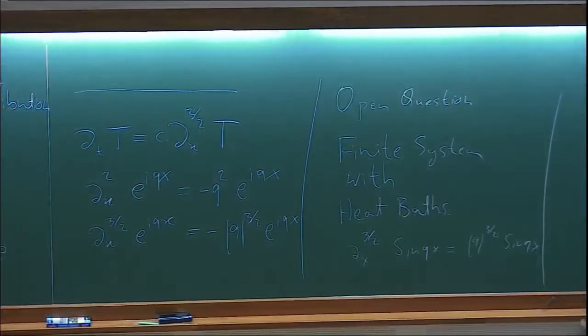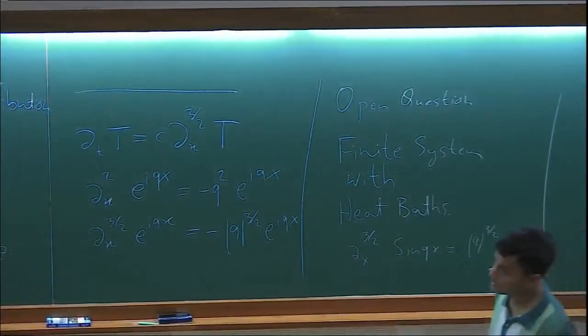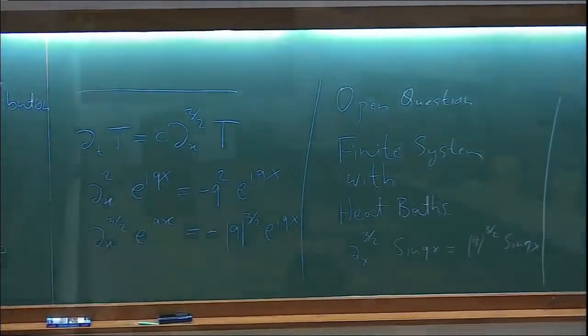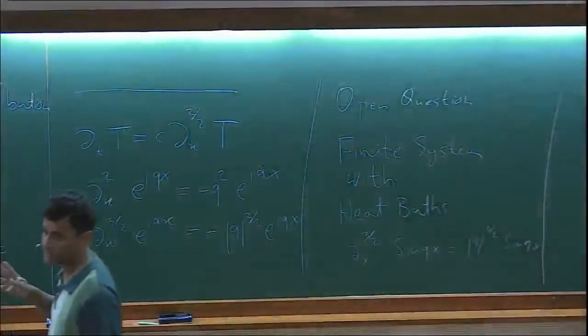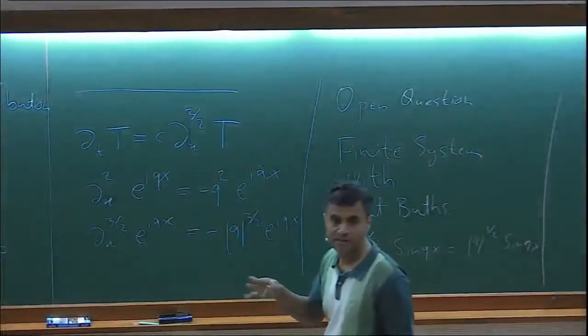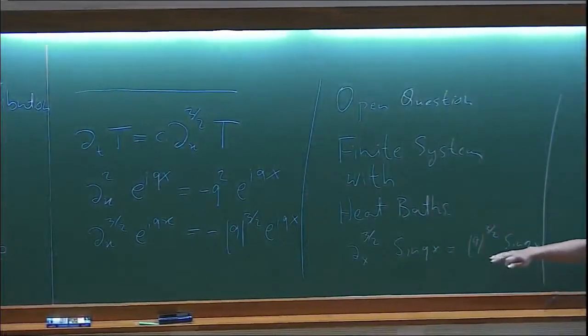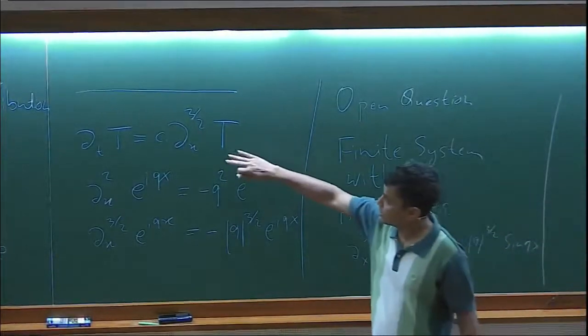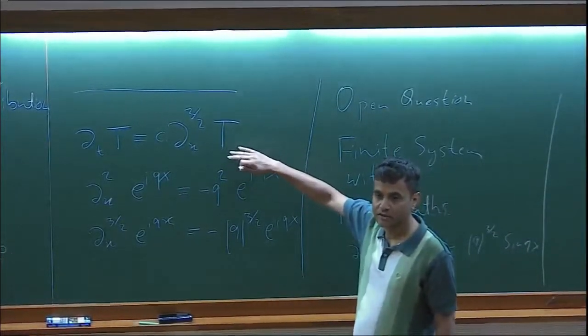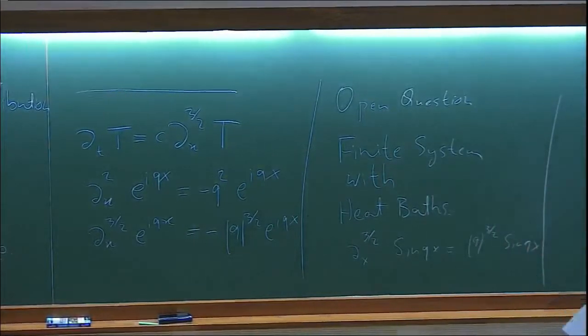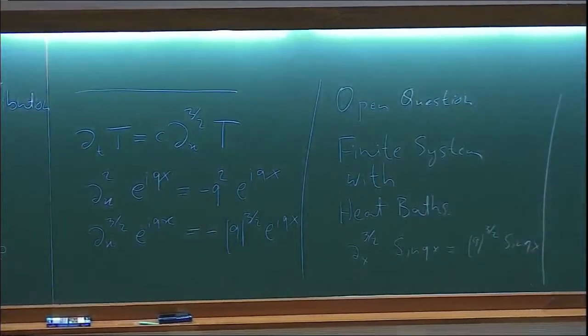What we have done in this recent work is actually start with a microscopic model, which is a slightly simplified version of this model, where instead of three conserved quantities, you have just two conserved quantities, but the model still exhibits anomalous transport. In that model, what you can show is that you can actually derive the corresponding fractional diffusion equation completely exactly.